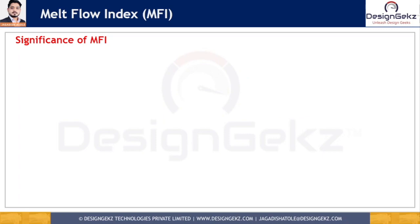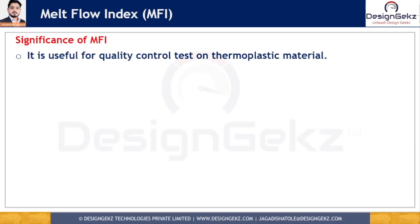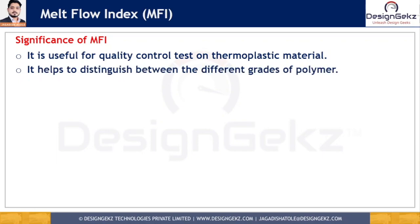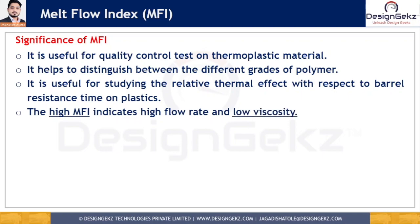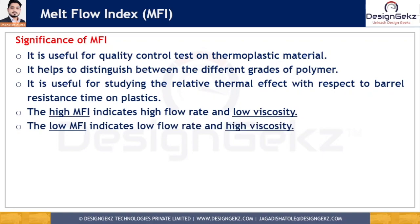MFI is important for quality control testing of thermoplastic materials. The reported MFI values help distinguish between different grades of polymers and can be used for studying relative thermal effects with respect to barrel residence time on plastics. It also gives an idea about which machine the material will be processed through, based on its flow rate behavior. High MFI indicates high flow rate and low viscosity; low MFI indicates low flow rate and high viscosity. In short, MFI is a valuable test for quality assurance and material/grade identification.